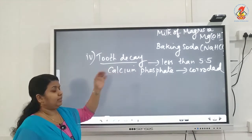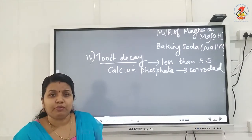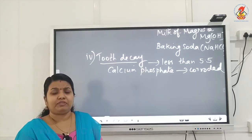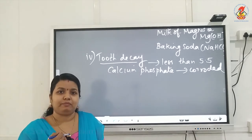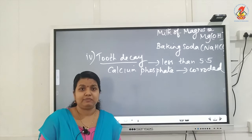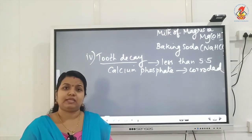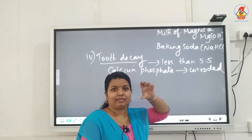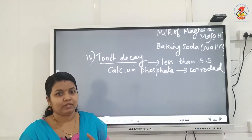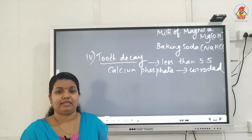How does the pH of the mouth fall below 5.5? There is bacteria present inside our mouth. After having meals, chocolates, sweets, etc., if you do not wash your mouth properly, leftover food items and sugar particles remain. The bacteria present in our mouth reacts with these leftover food items and sugar particles and produces acid. That is how the pH becomes less than 5.5, causing the tooth enamel made up of calcium phosphate to get corroded.